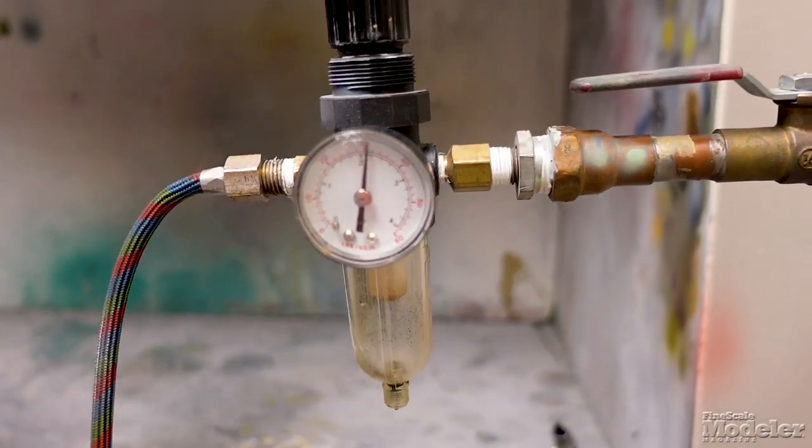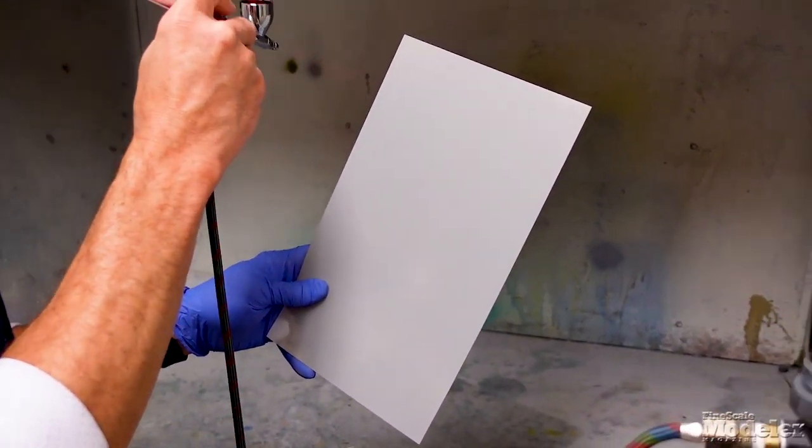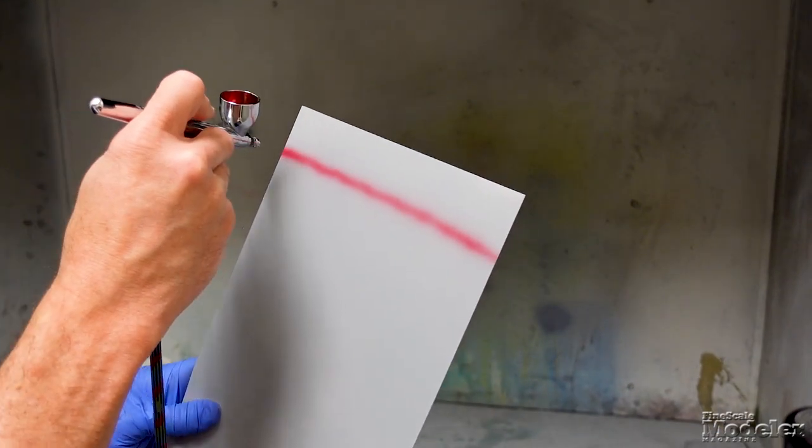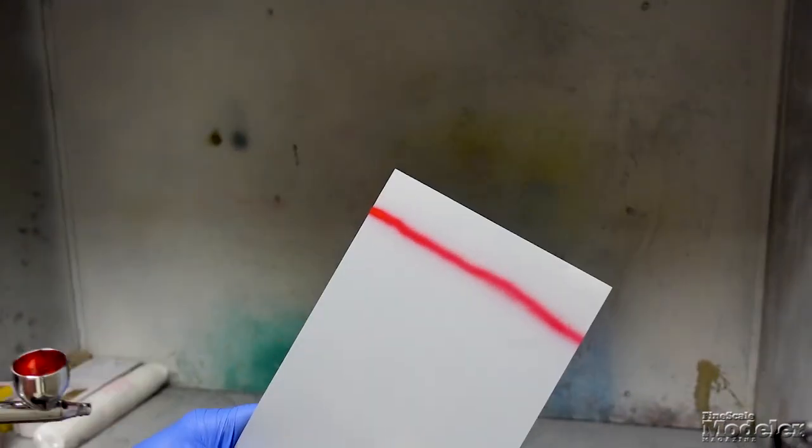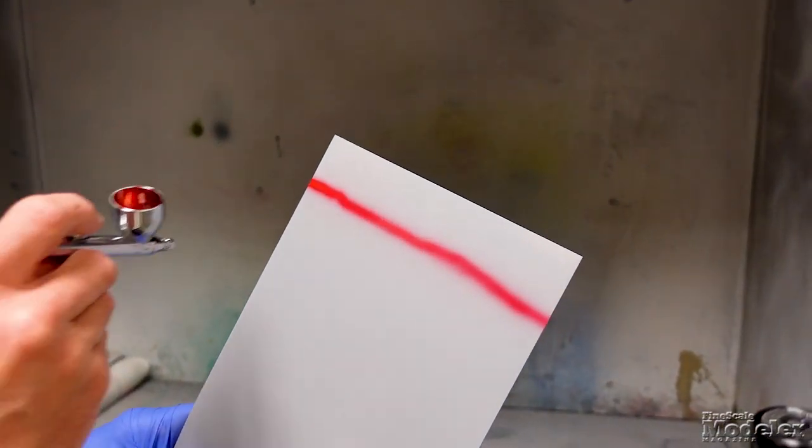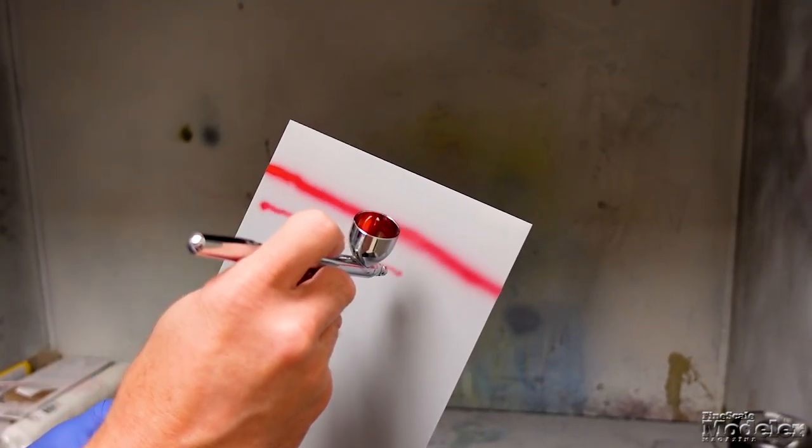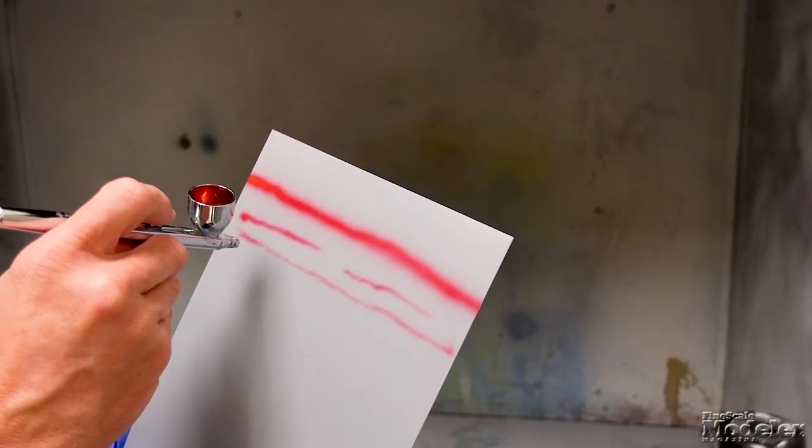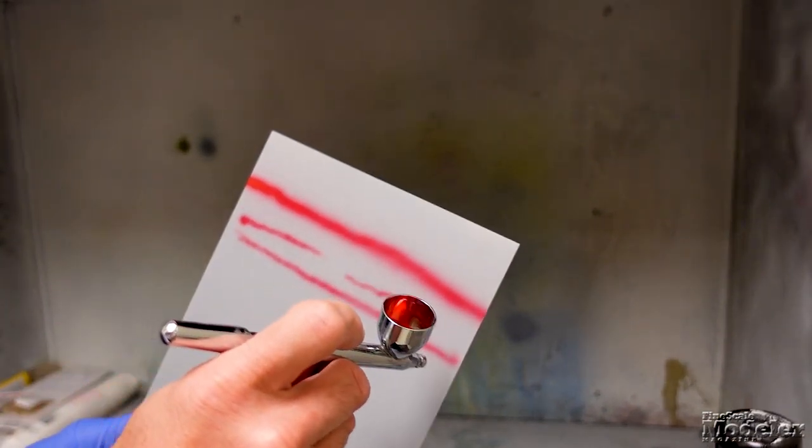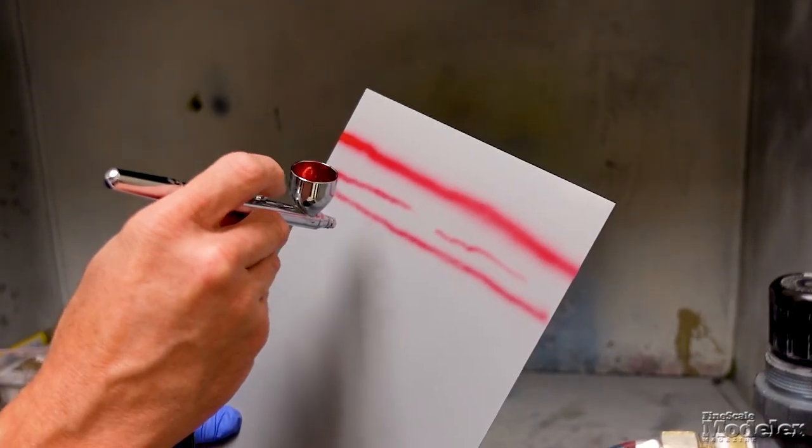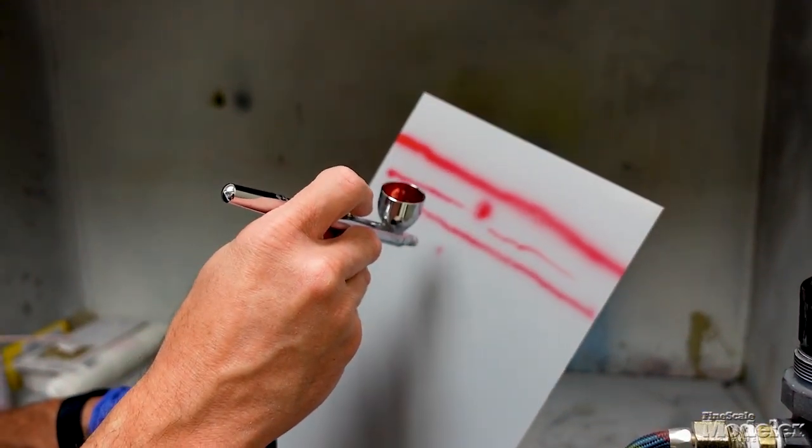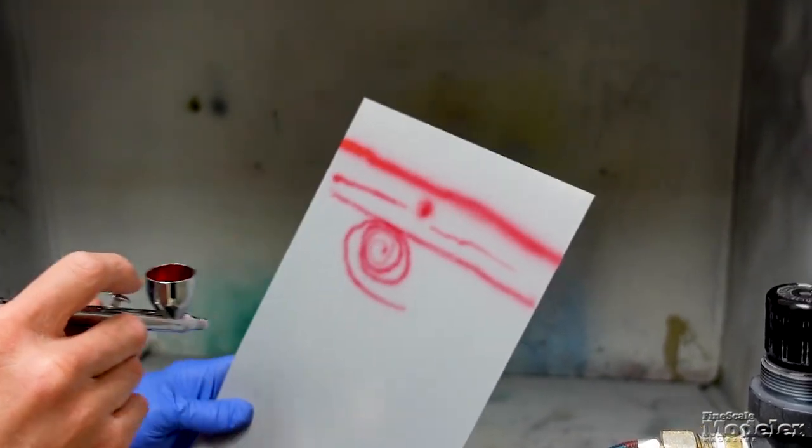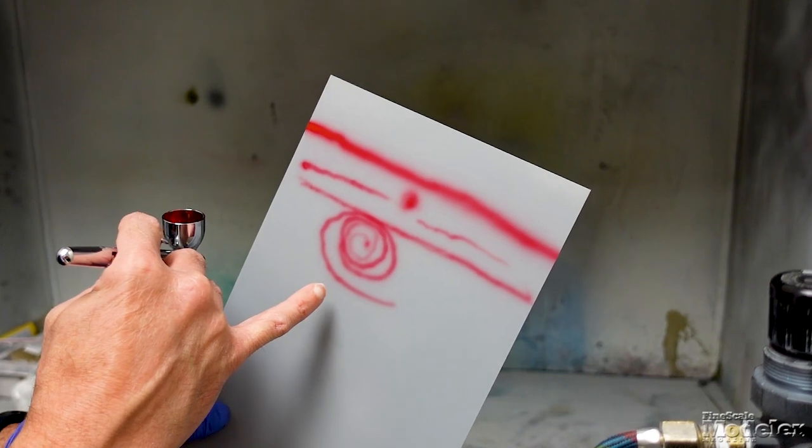At 30 psi, so you get a lot tighter line, a lot less fuzz at the edges. It's also a lot harder. You have to be a lot more on the ball if you're trying to spray a fine line because there's a lot of paint coming out of there. But you can see on that fine line how tight that pattern is.